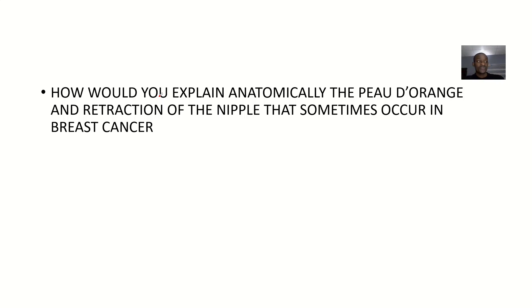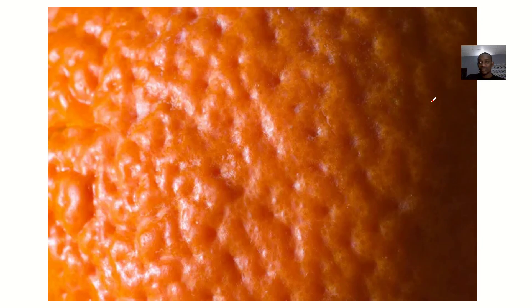Peau d'orange refers to the surface area of the breast — the surface of the breast starts becoming like the skin of an orange. Peau d'orange is a French name for orange peel. So they're simply saying the breast starts looking like this, with small dimples all around it, rough and no longer smooth. I've brought a picture of an orange so that everybody can visualize what we mean.